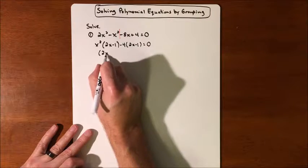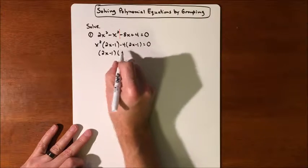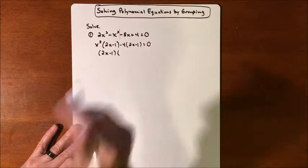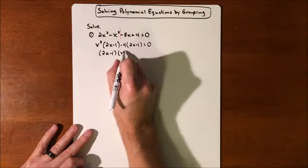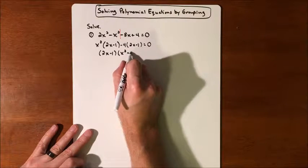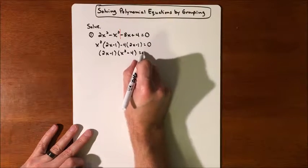So that'll leave us with a 2x minus 1. Factor that out of both of those two pieces. We'll have left an x squared minus 4 equals 0.